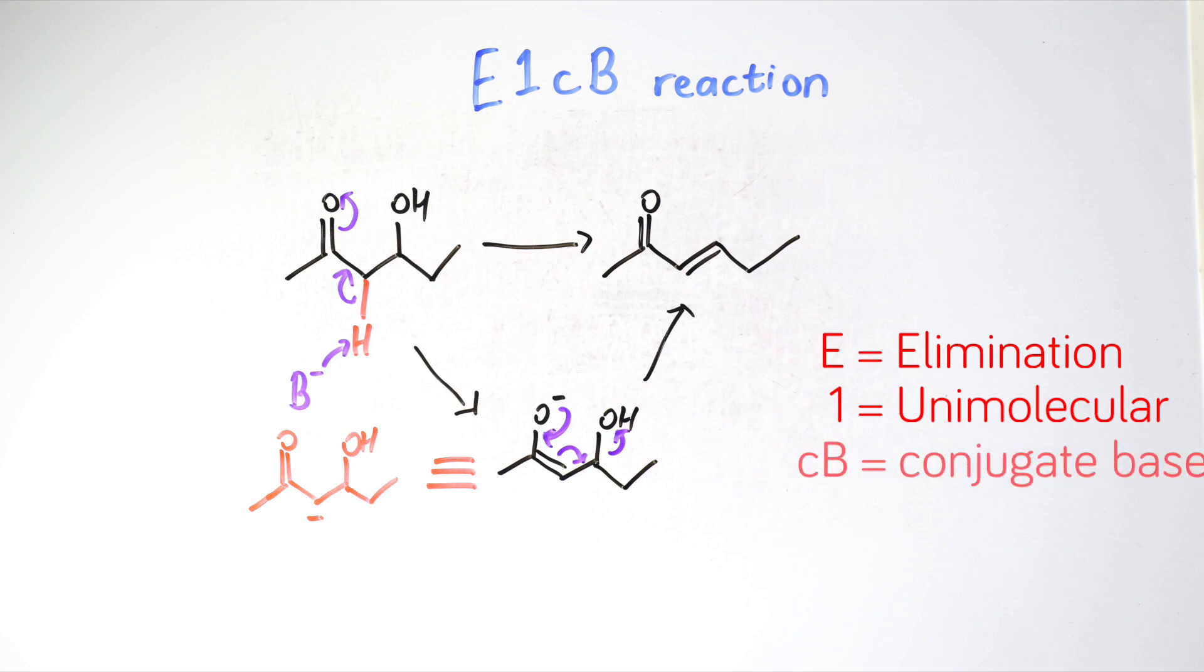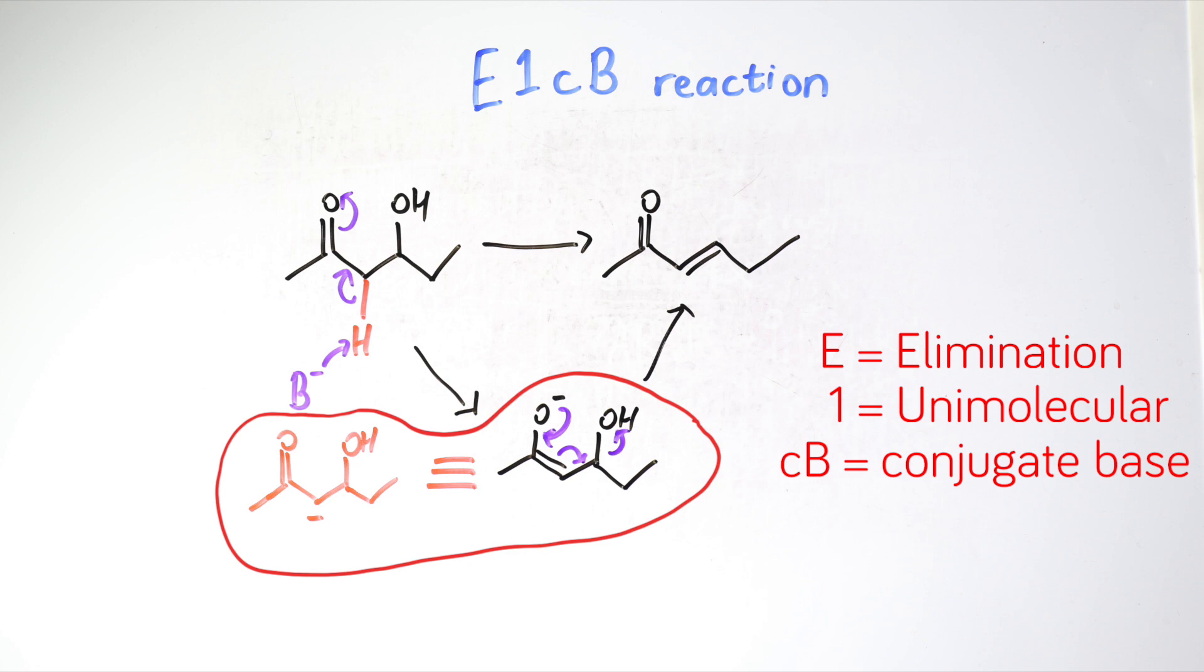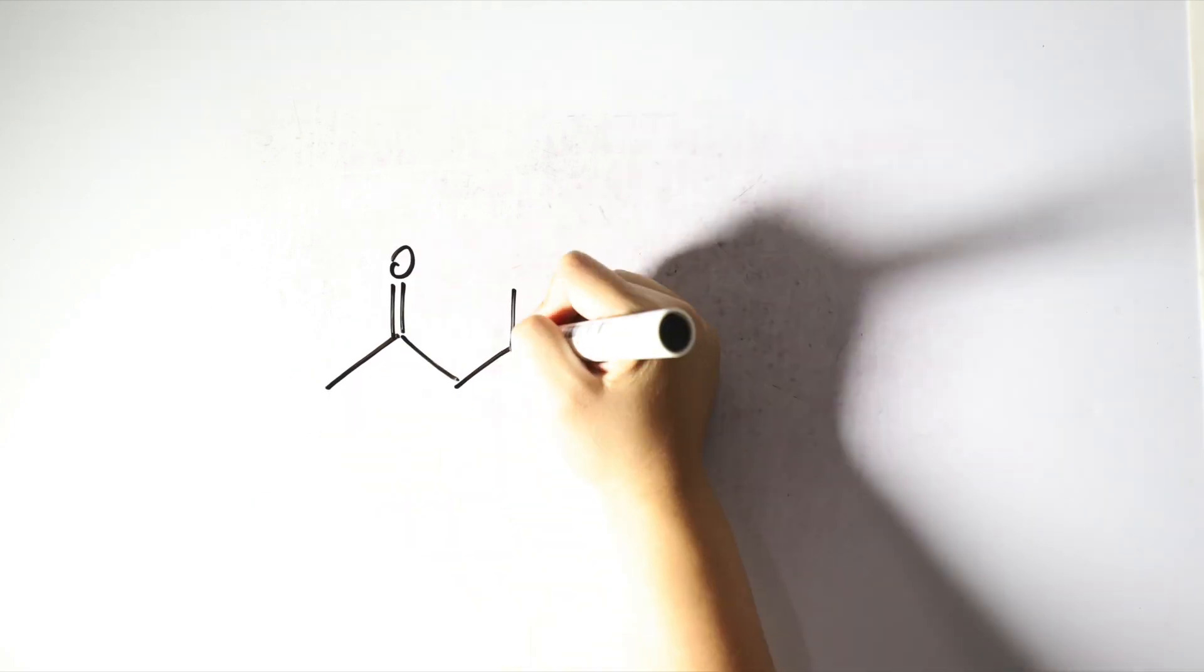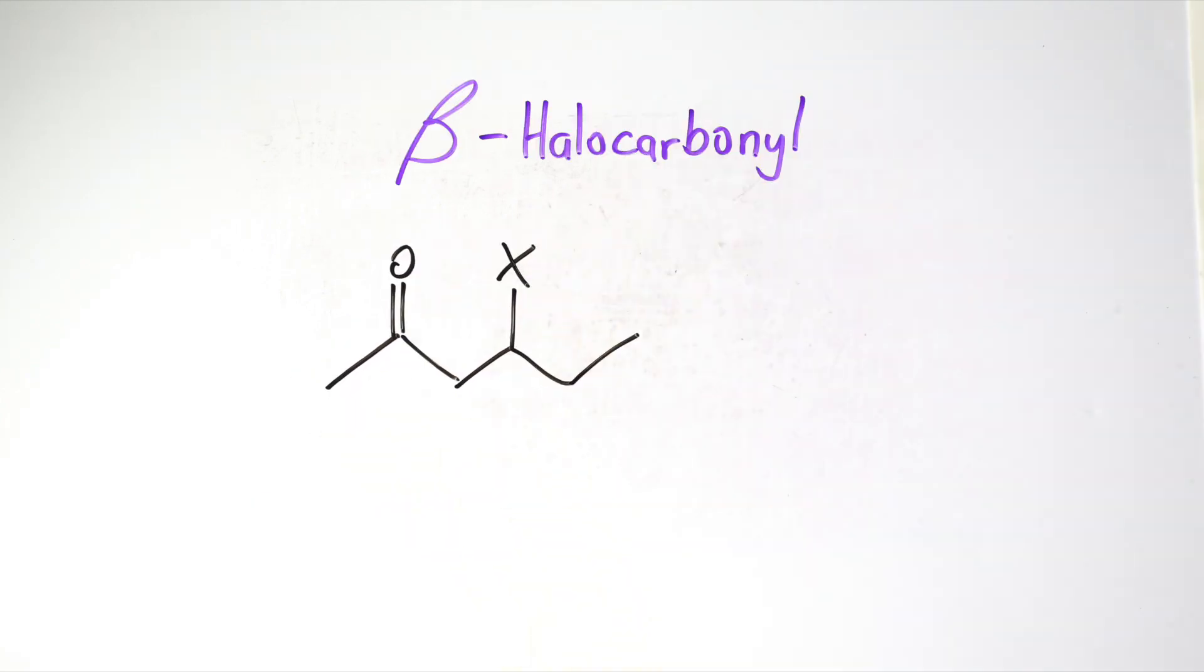CB stands for conjugate base, the negatively charged version of the starting material. One of the perfect candidates for E1CB reaction is beta-halo carbonyl compound because halogen is a good leaving group and the beta hydrogen is also acidic.